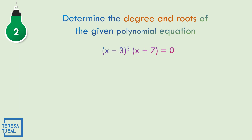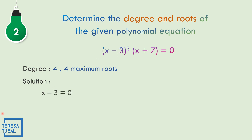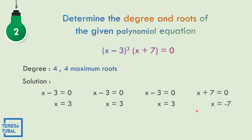Number 2: (X minus 3) cubed times (X plus 7) equals 0. The degree is 4 because X cubed times X is X to the 4th, so we have 4 maximum roots. Since (X minus 3) is raised to the 3rd power, we solve X minus 3 equals 0 three times, giving X equals 3 with multiplicity 3. Then X plus 7 equals 0 gives X equals negative 7. So the roots are 3 with multiplicity 3, and negative 7.